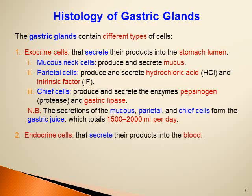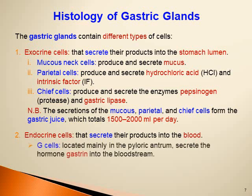The gastric glands also contain endocrine cells that secrete their products into the blood. These include mainly G cells, located primarily in the pyloric antrum, which secrete the hormone gastrin into the bloodstream.